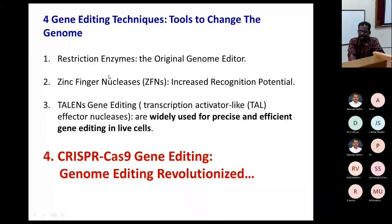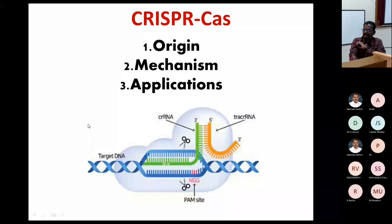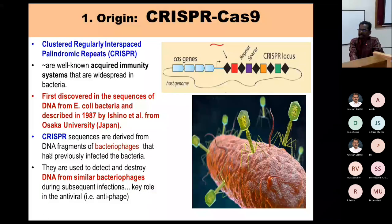Coming to genome editing — there are four different techniques available, and I'm going to discuss the CRISPR-Cas gene editing system. CRISPR-Cas has revolutionized the world and is going to do so again. What is the origin, what is the mechanism, what are the applications? The CRISPR-Cas system is a very, very powerful technique. CRISPR stands for Clustered Regularly Interspaced Short Palindromic Repeats — palindromic sequences that read the same forward and reverse, like 'Madam' or 'Malayalam.' The CRISPR locus is present in array form. The Cas9 gene is the CRISPR-associated gene sequence.